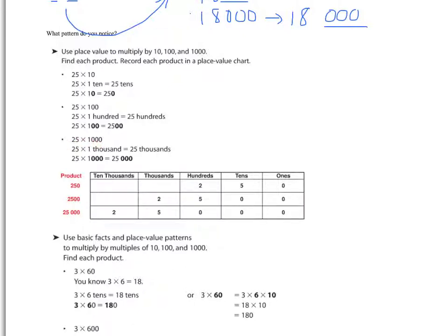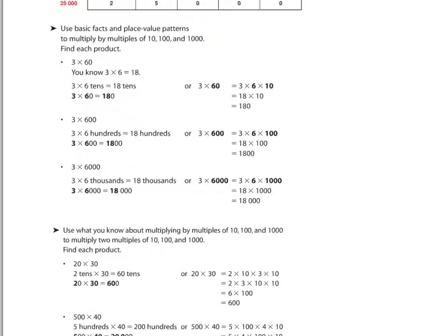25 times 1,000. Well, 1,000 25s. How much is that going to be? 25 thousands. So we have 25 times 1, which is 25. We add those three zeros back on. 25,000. We can use basic facts and the patterns that we see in place value to help us to multiply by 100, by 10, by 1,000. All we have to think of is this.